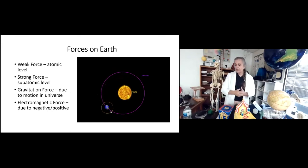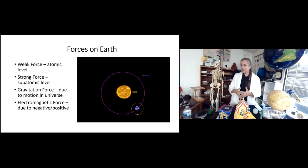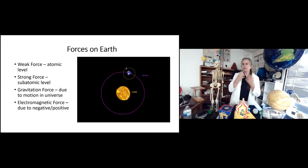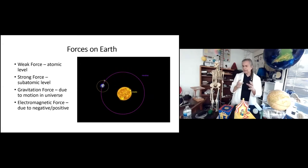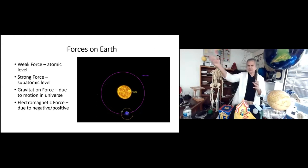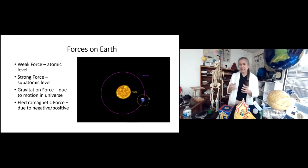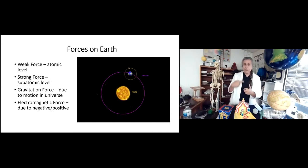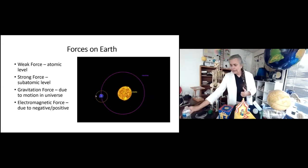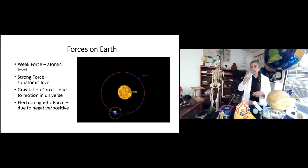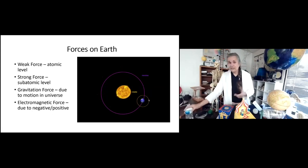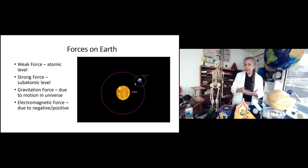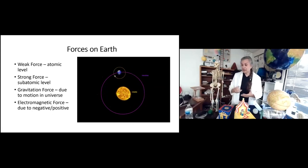In that picture on the right there's the sun in the middle, and by gravitational attraction — meaning something really large in the universe attracts something smaller — it's attracting the planet Earth. And if you notice, there's something going around the Earth. That's the moon. That's because the Earth is bigger than the moon and it's attracting it.